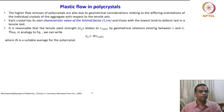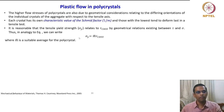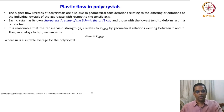It is reasonable that the tensile yield strength sigma Y relates to tau CRSS by the geometrical relation existing between tau and sigma. In analogy with the above equation, we can write sigma Y equals m-bar times tau CRSS, where m-bar is a suitable average for the polycrystal — from Schmid's law.